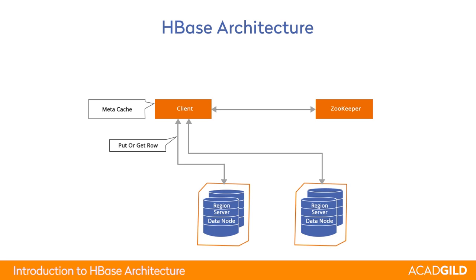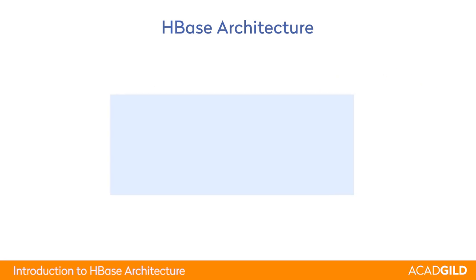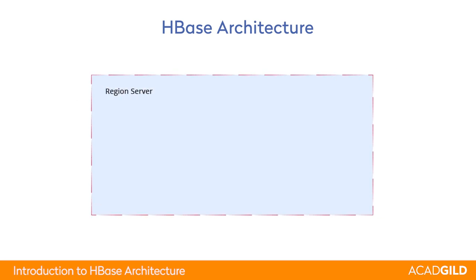Get is an operation which the client performs to read a particular entry from the HBase table, and Put is an operation performed by the client to write some data to the HBase table. Whenever these operations are required, the client connects to the ZooKeeper to get the address of the meta table. On getting the address of the meta table, it stores the details and looks up to connect to a specific region server. Inside a region server, there can be multiple regions which may be present in the same table or different tables.